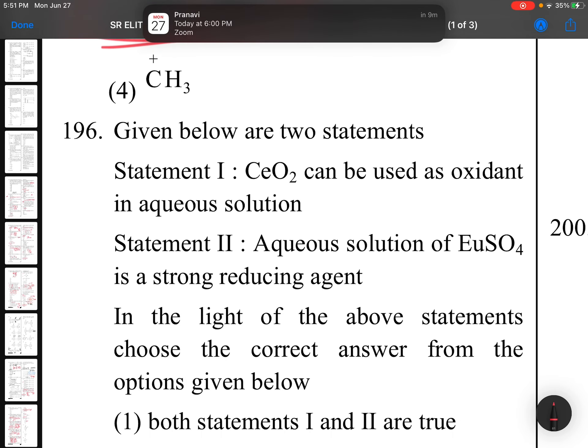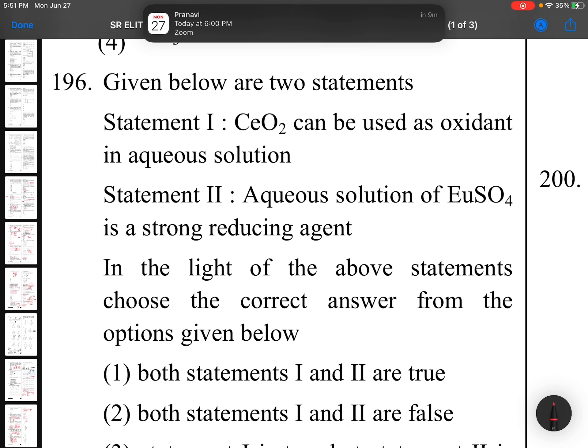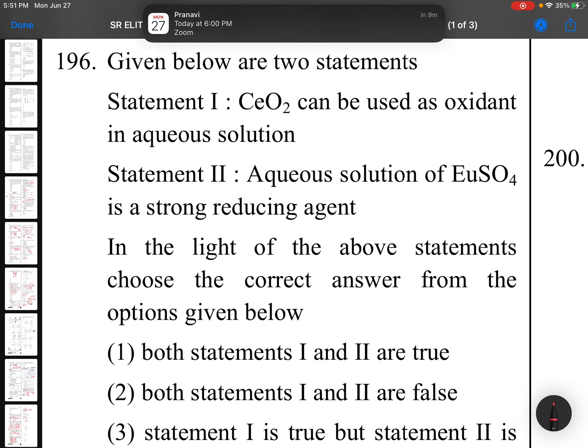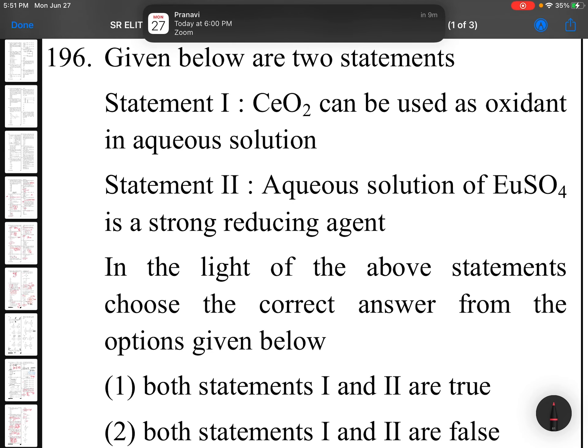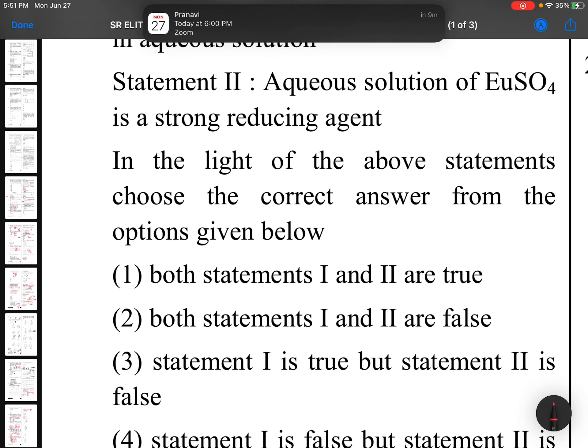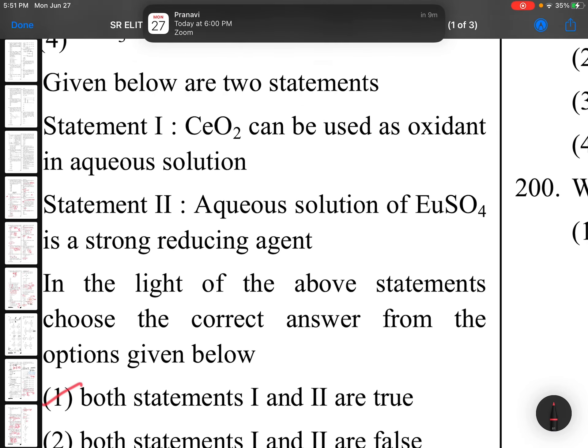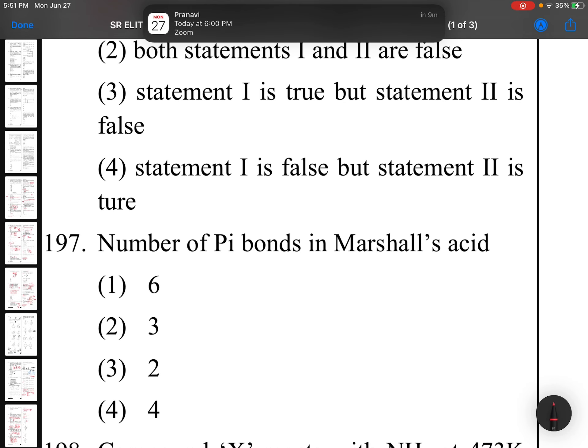Question 196: Given below are two statements. Statement 1: CeO2 can be used as oxidant in aqueous solution. Statement 2: Aqueous solution of EuSO4 is strong reducing agent. If my suggestion, try to avoid these kind of questions because they are taken from F block elements, very tough to remember. Generally both statements will be correct - they don't want to take risk and generally give correct statements only.